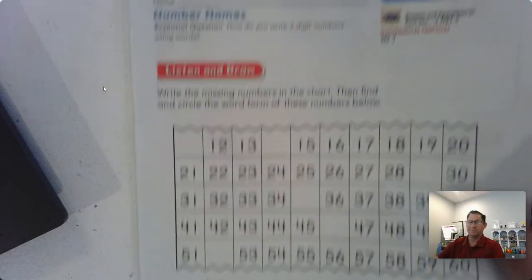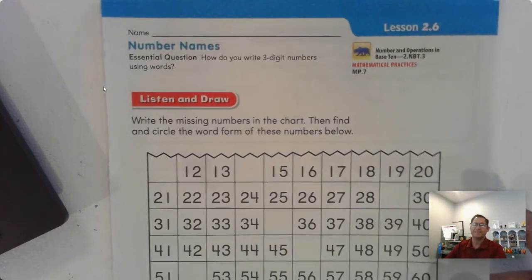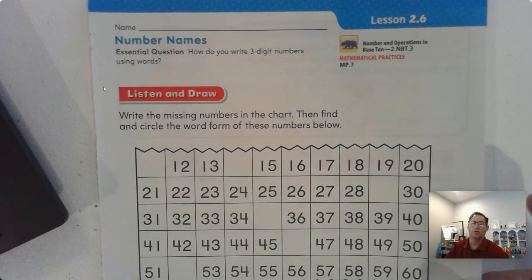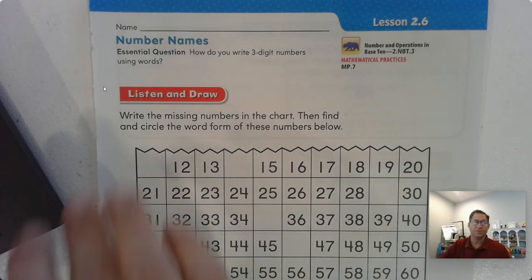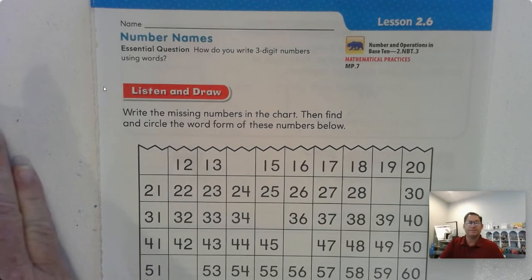Hello, everybody. In today's lesson, we're going to be covering lesson 2.6 of the second grade GoMath textbook. In this lesson, we're going to be talking about how to write three-digit numbers using words. Let's go ahead and get started.